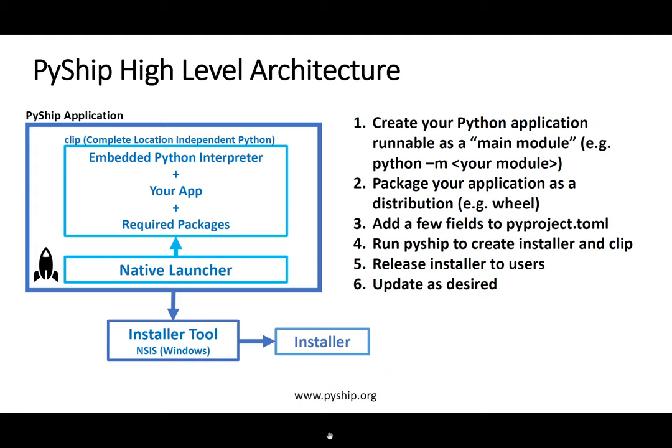PyShip also creates an installer. This is a normal Windows installer created using the NSIS utility application. PyShip can also automatically upload all of this to the cloud, and currently Amazon Web Services is supported. Then you can reference your installer as an S3 object — just a pointer to it — and have users download it from S3.